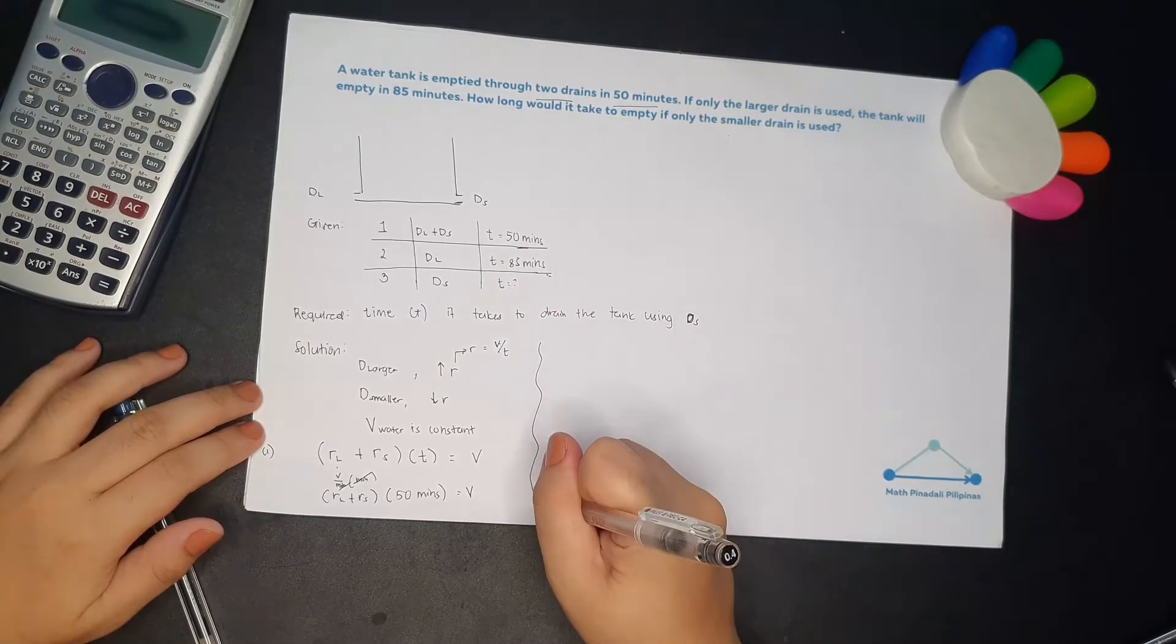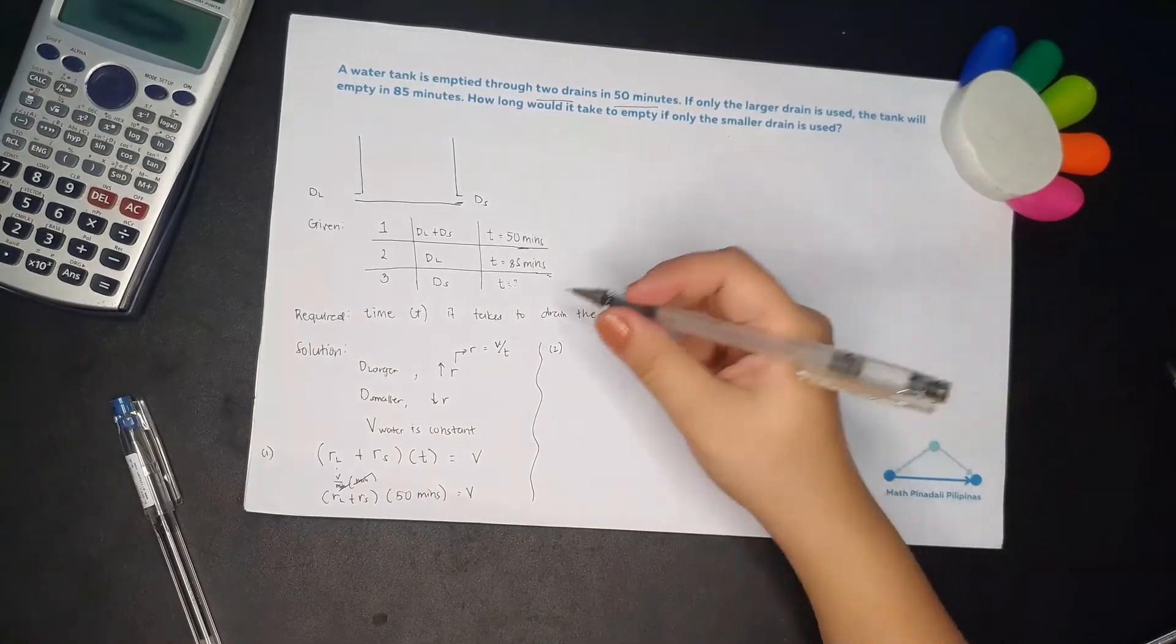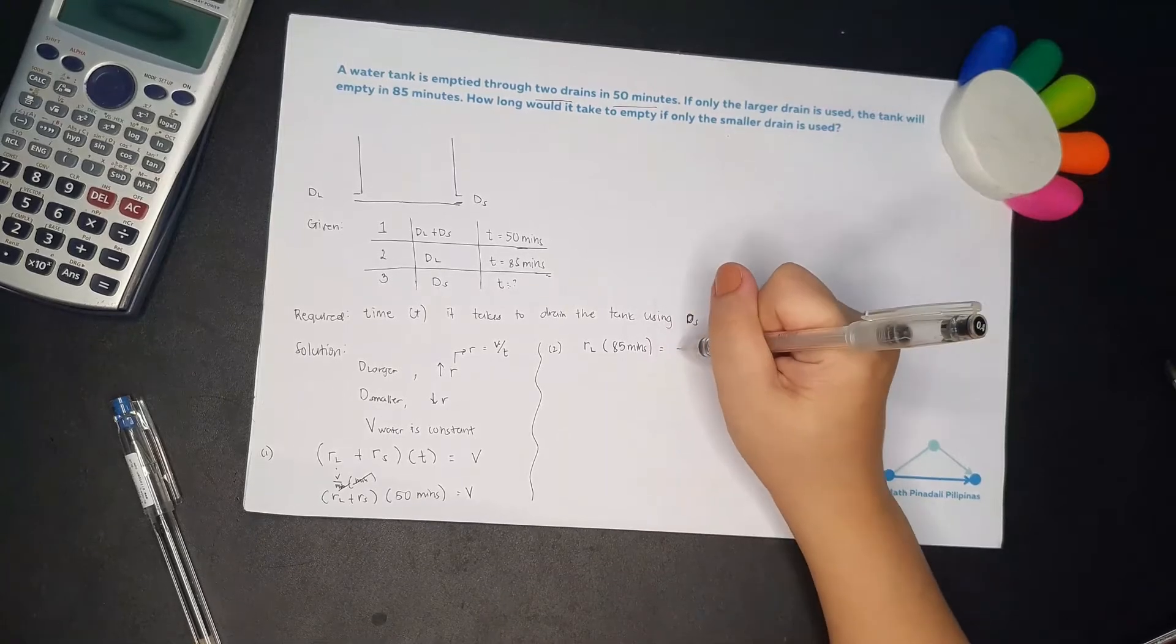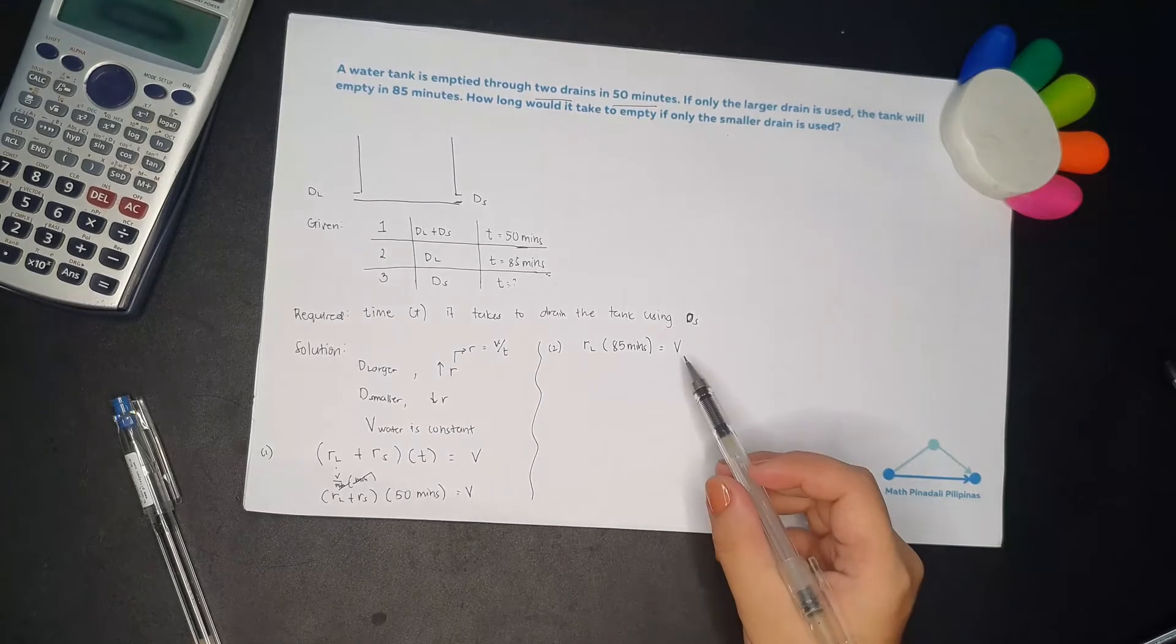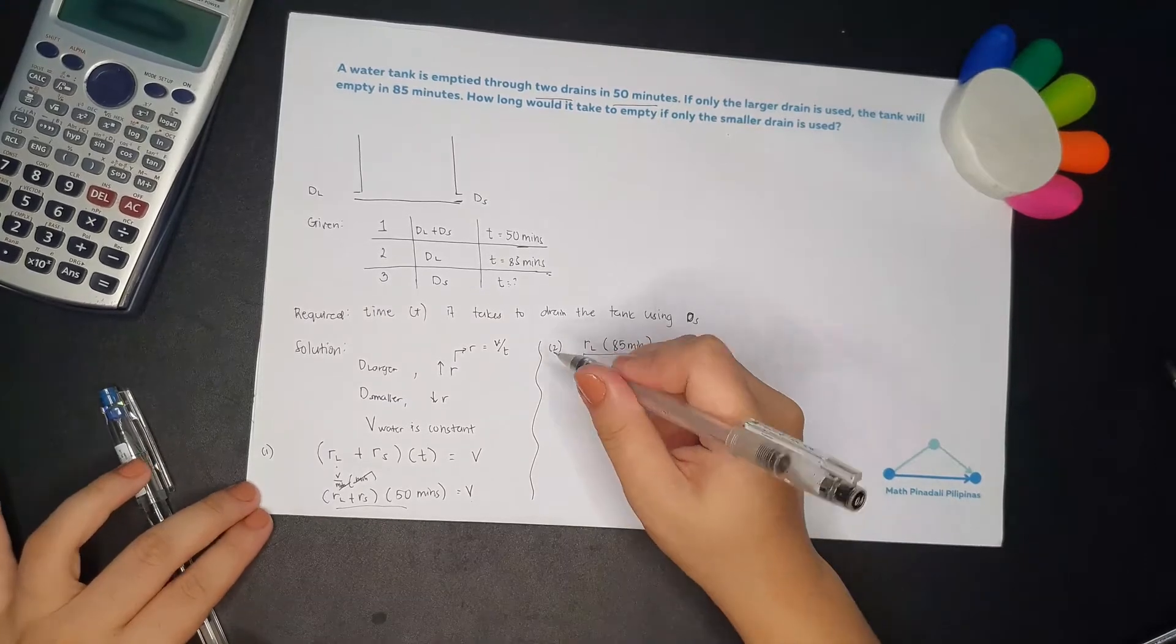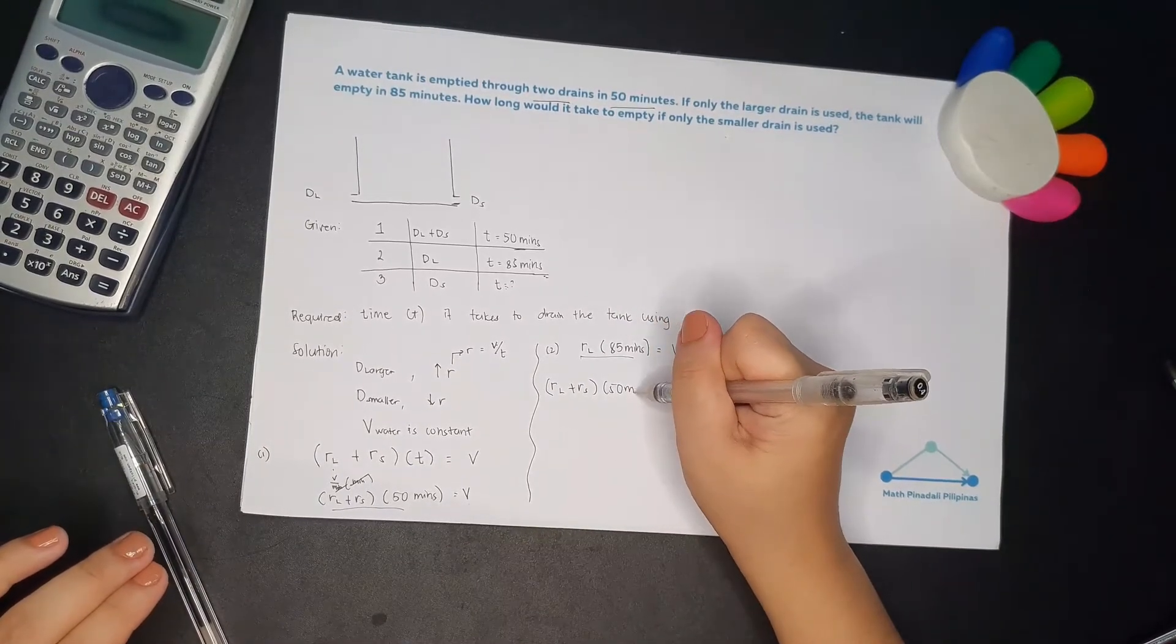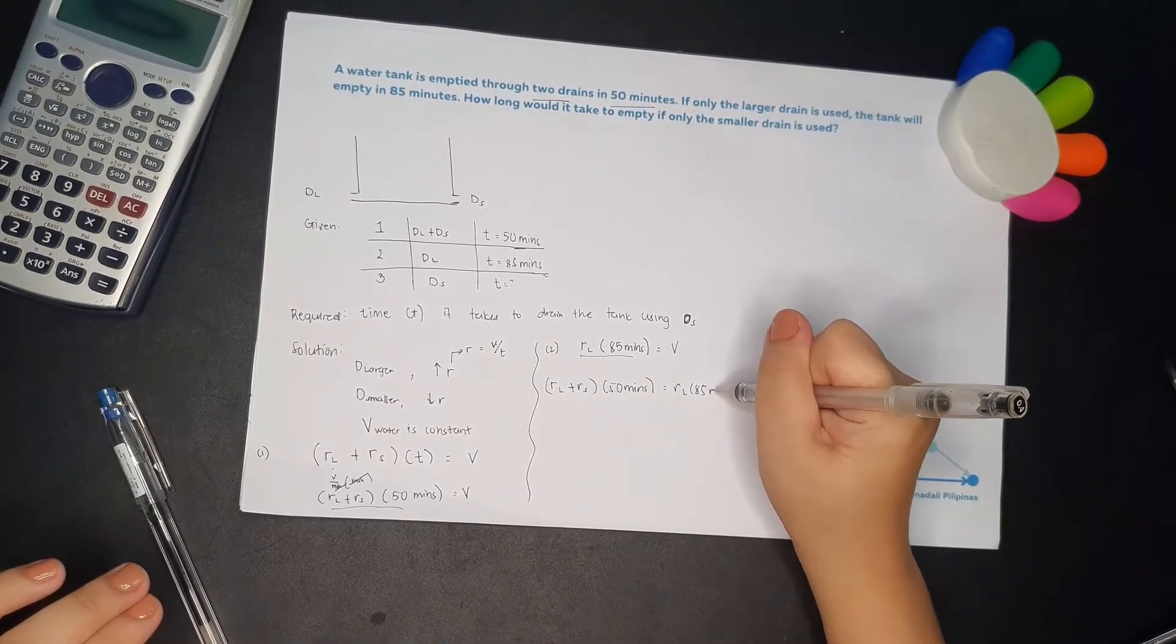So scenario 1, RL plus RS, multiply by 50 minutes. And then volume. For the scenario 2, isang drain lang yung ginamit. So RL multiplied by 85 minutes. So it's equal to volume. Since they are both equate to volume, ipad-equate natin ito. So RL plus RS, 50 minutes, equal to RL times 85 minutes.